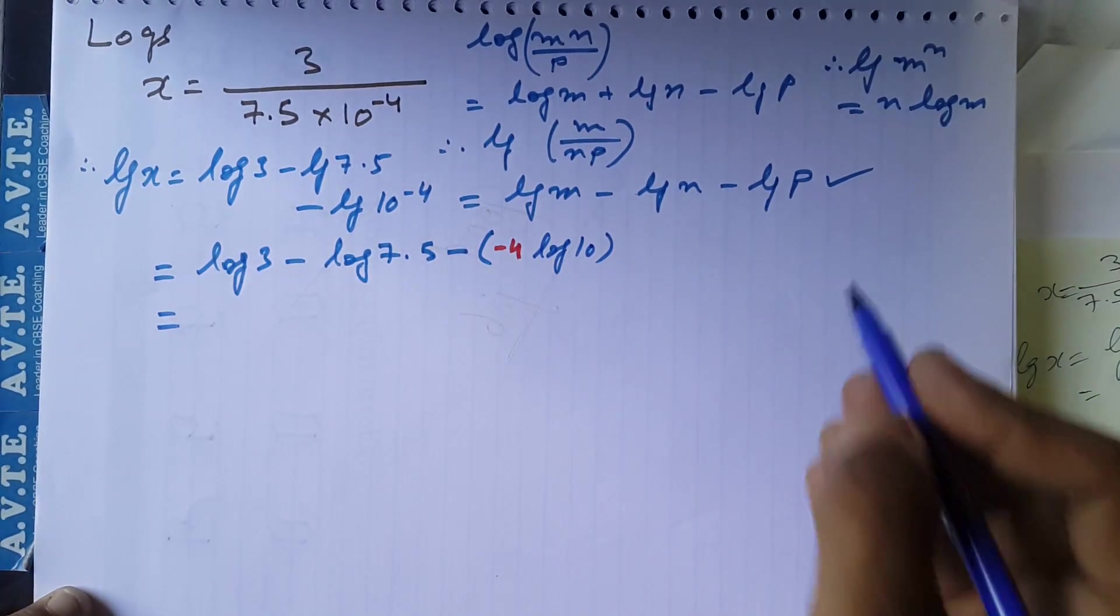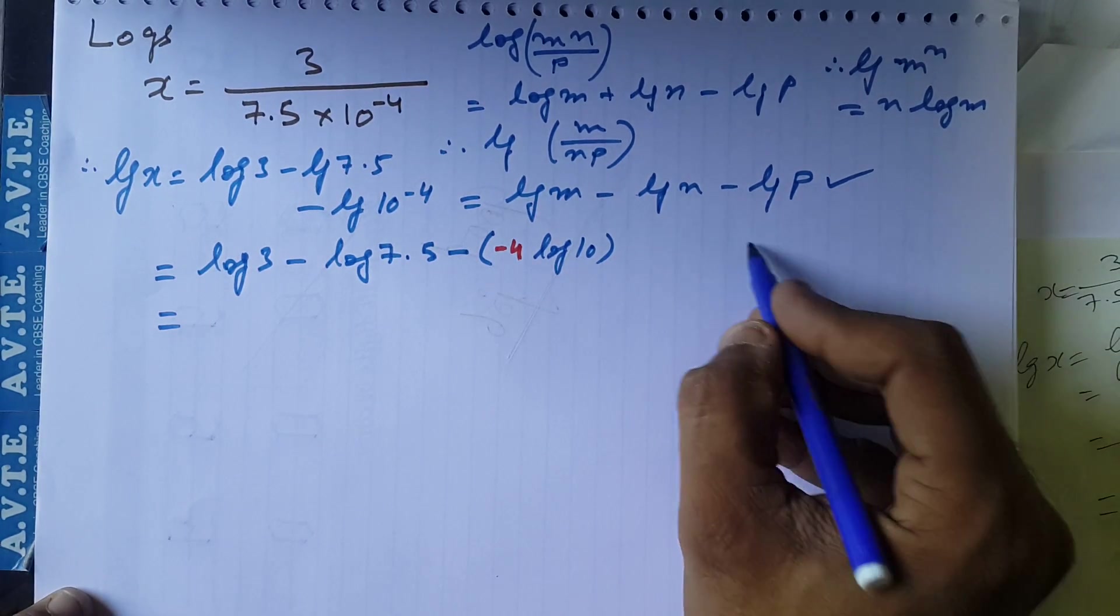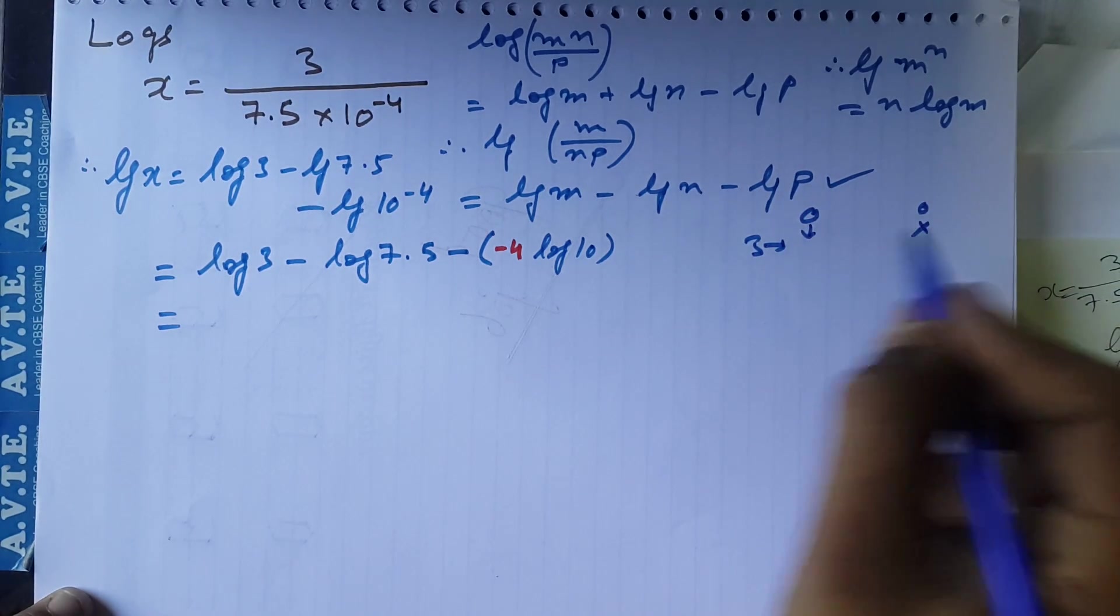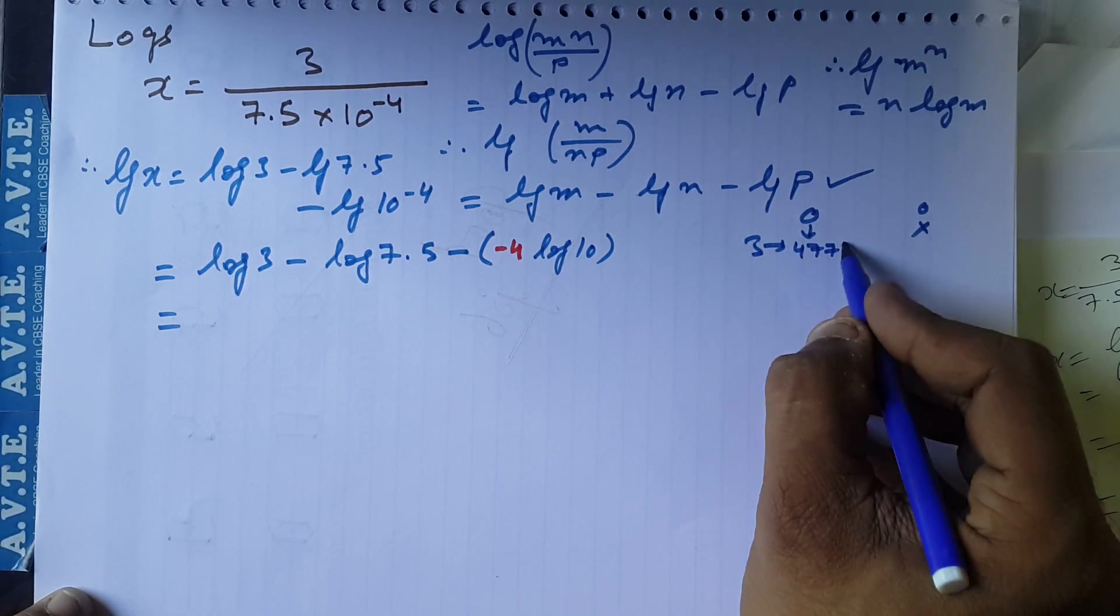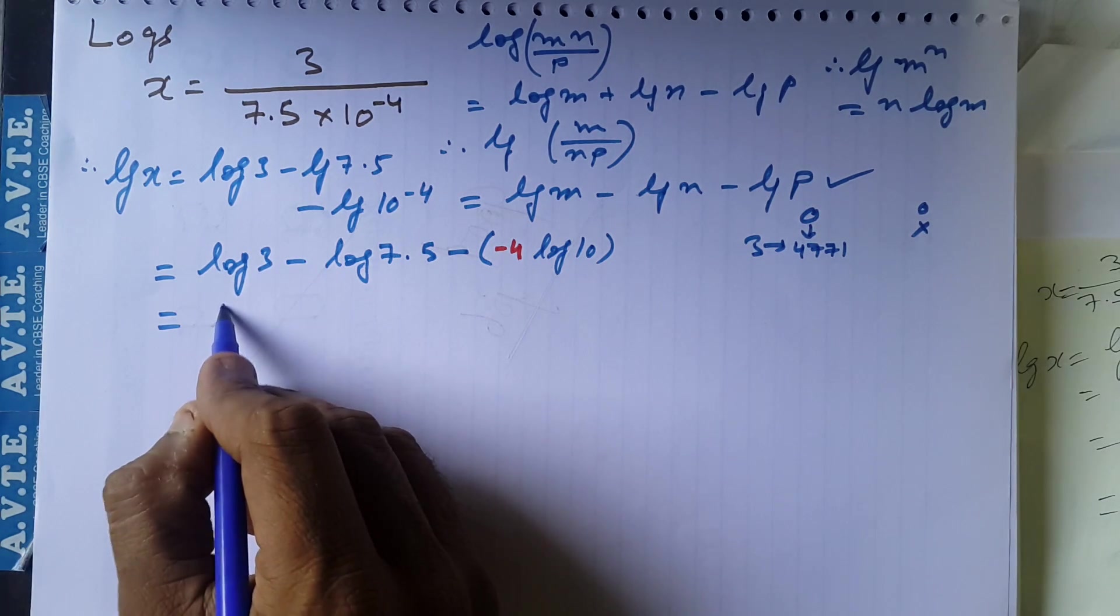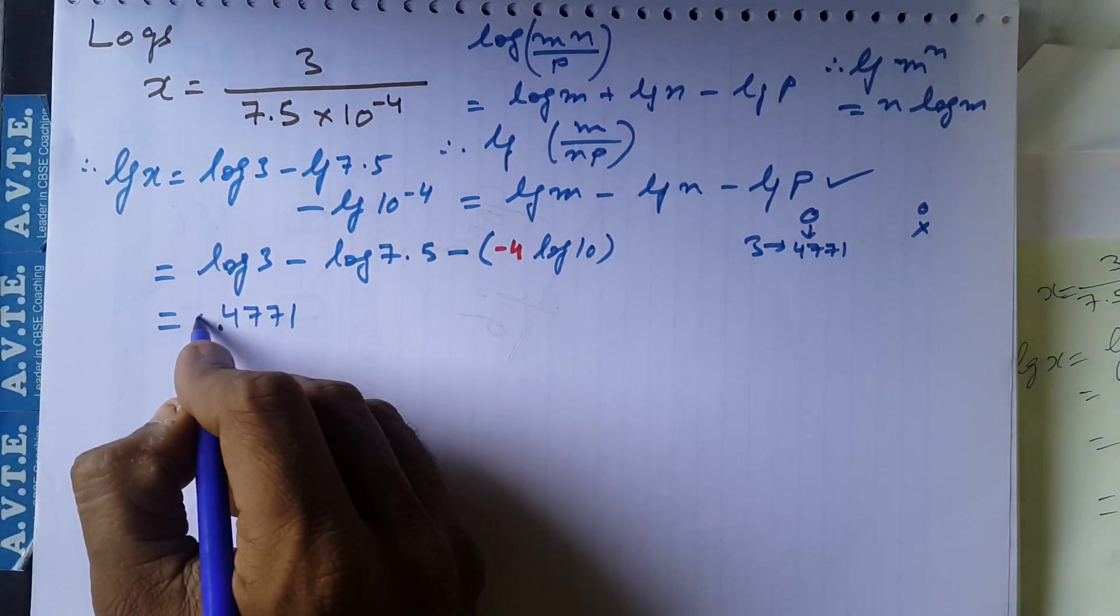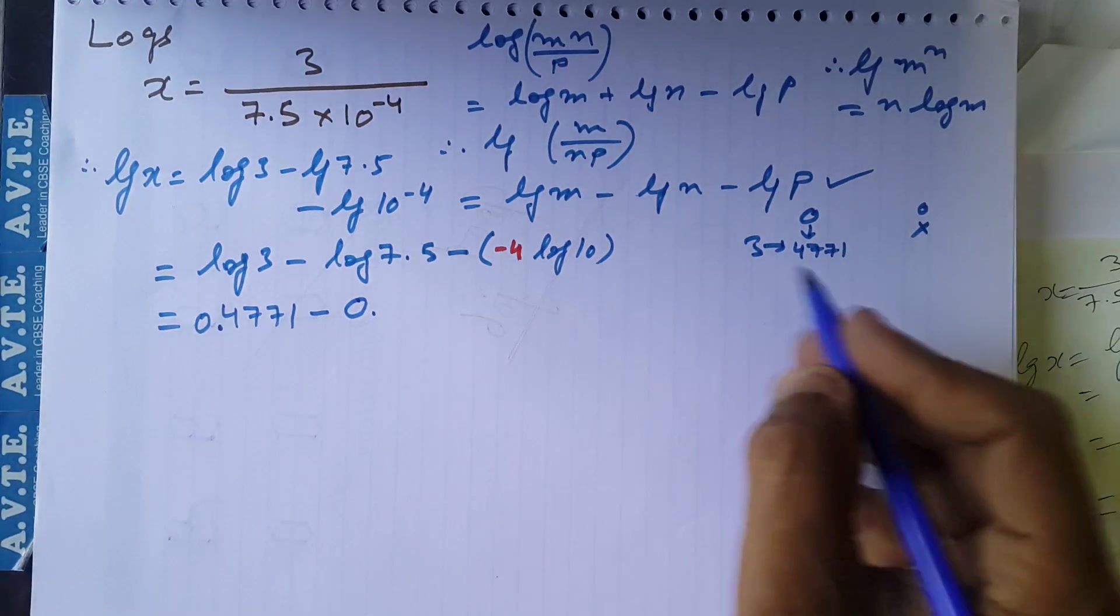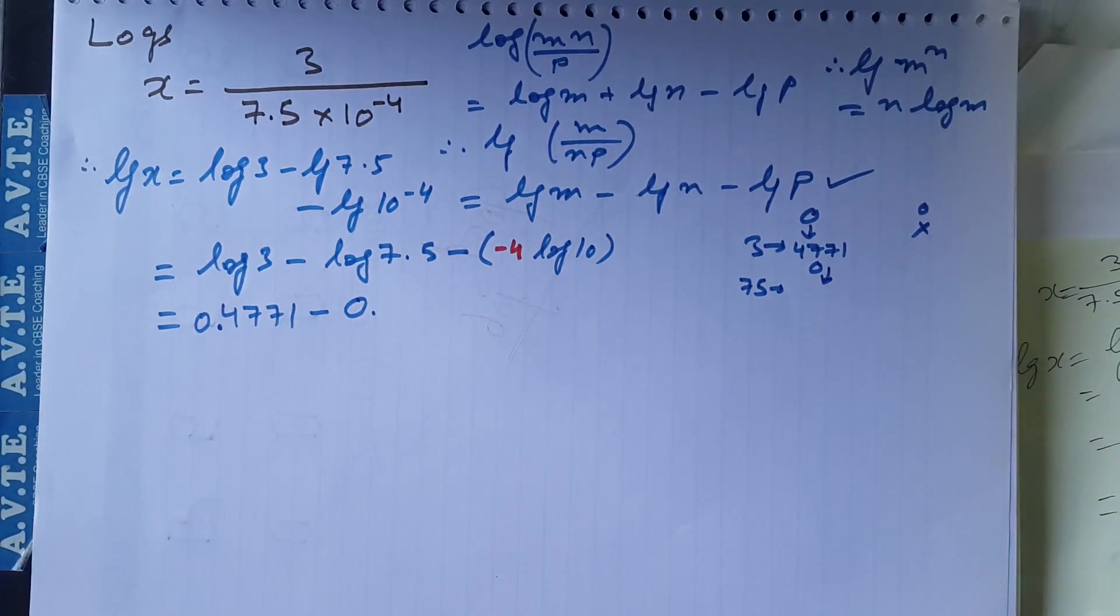So that is log 3. Log 3 we see in front of 3 under 0, the answer is 0.4771. This is the point. Log 7.5, characteristic is 0. We see 75 in front of 75 under 0. These values I have taken from a log table.